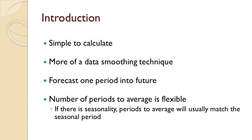The number of periods to include in the average is flexible and will generally be given by the problem you are working. Three, four, and five are fairly common. If there is seasonality, the number of periods being averaged will generally match the number of periods in the seasonality. That is, quarterly data, for example, will generally use a four-period simple moving average.